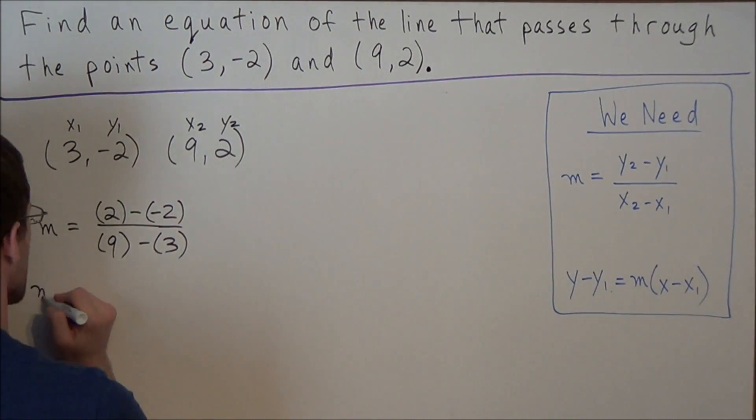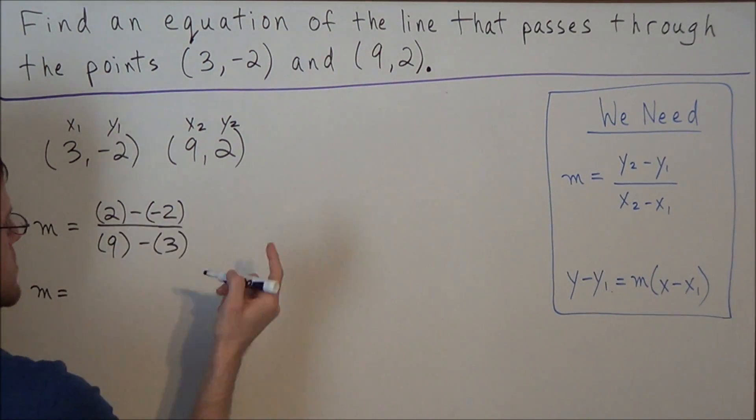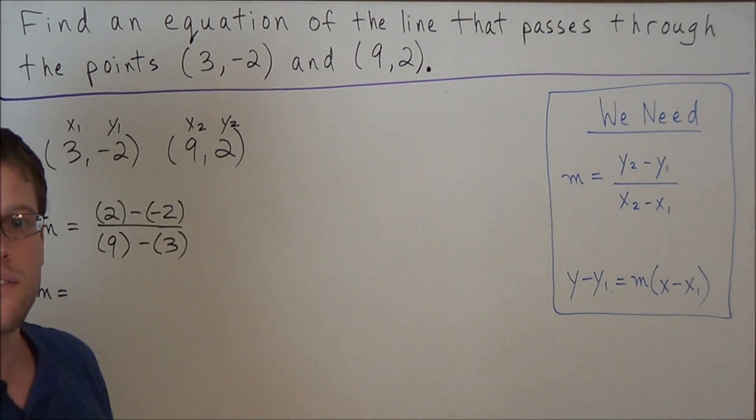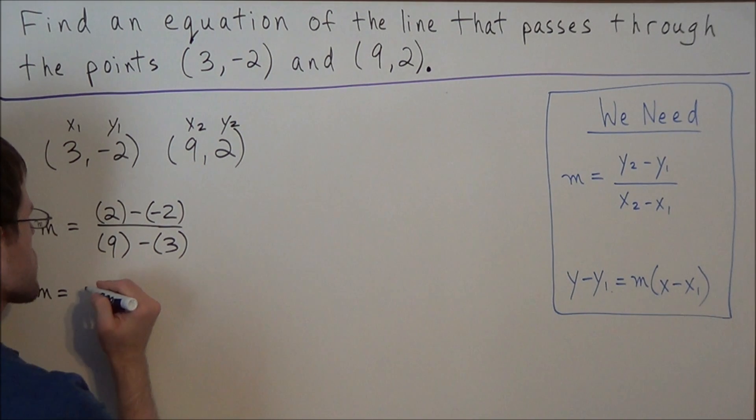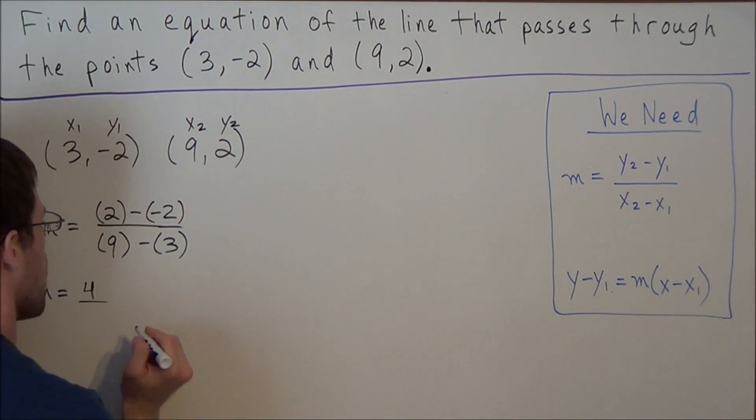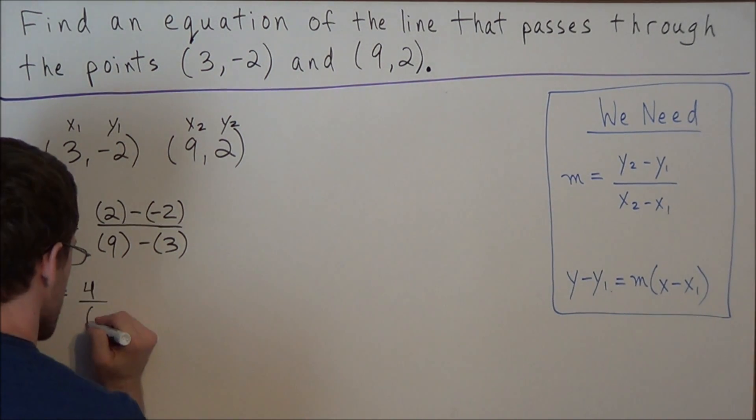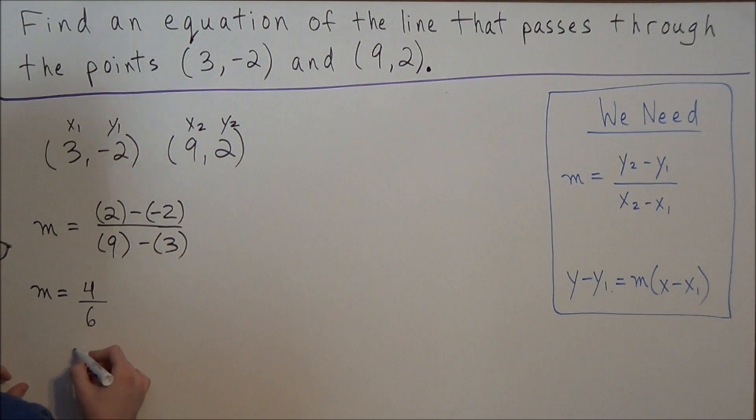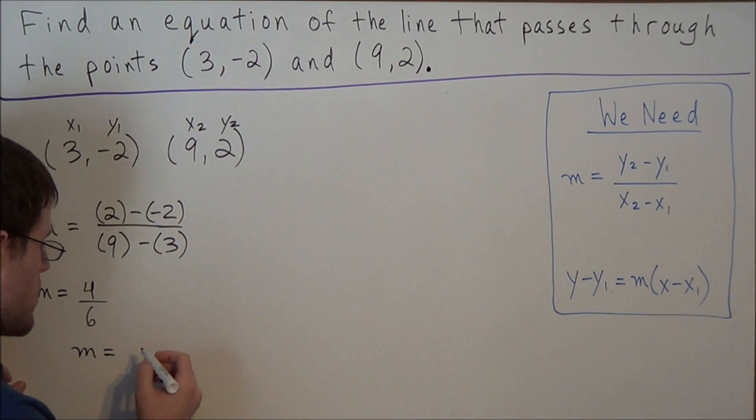So now we simplify, and we have 2 minus or minus 2. When we subtract negatives, that operation changes to addition. So we have positive 4 over 9 minus 3 is 6. And now we just need to reduce this fraction. And to do so, we could divide the numerator and denominator by 2. So our fraction reduces to two-thirds.